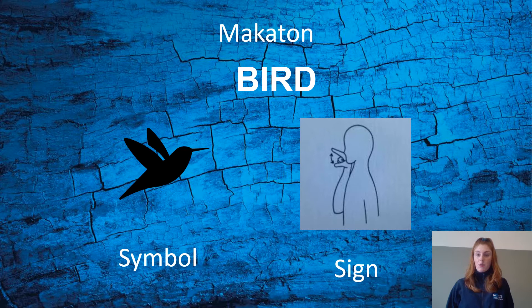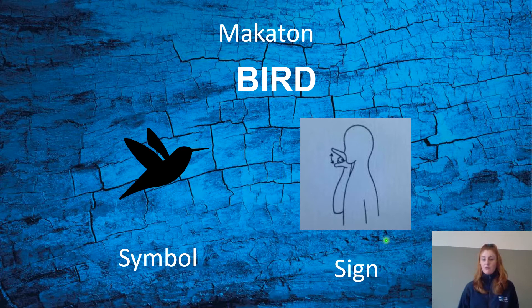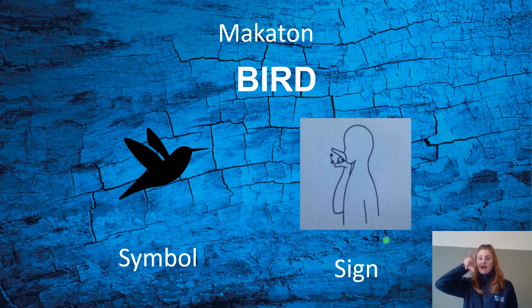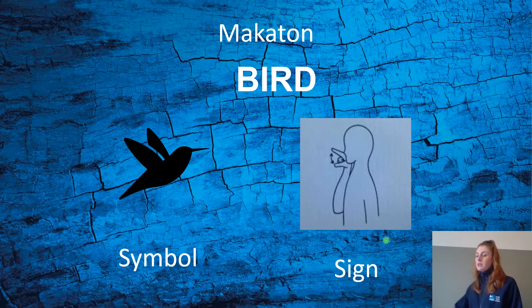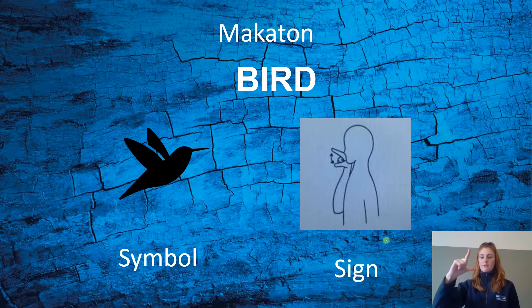Today's word we're going to learn in Makaton is 'bird.' We can see the picture of the bird, which is the symbol. To make the sign for bird, take your dominant hand — the hand you use most — put your forefinger and thumb together, turn it on the side, hold it up next to your mouth, and move your finger and thumb together like this. Can you try it along with me? Bird.